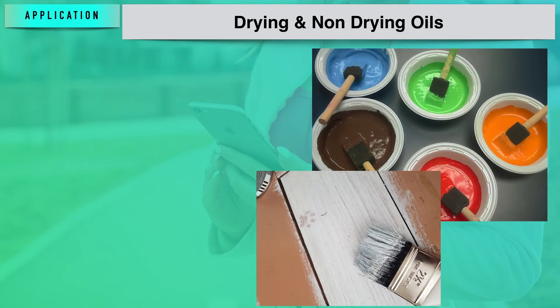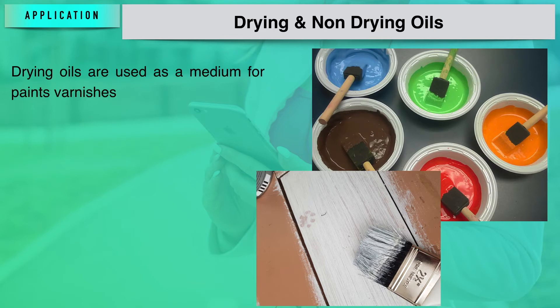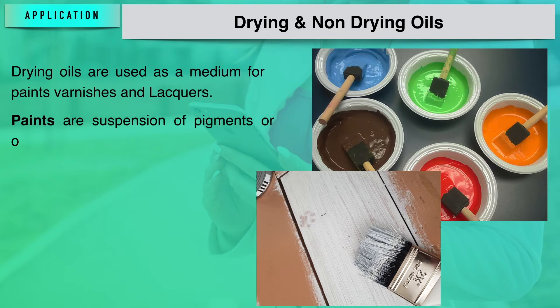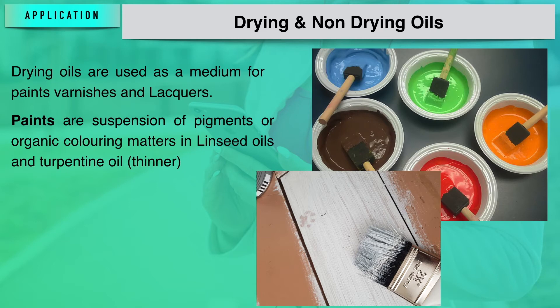Drying oils are used as a medium for paints, varnishes, and lacquers. In fact, paints are suspensions of some pigments or organic colouring matter in linseed oil, to which some turpentine oil has been added in the form of a thinner. When these paints are applied on any wooden or iron surface in the form of thin layers, they quickly dry up and form a tough organic film which protects the surface being painted.